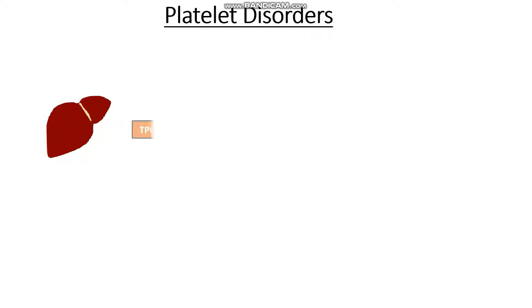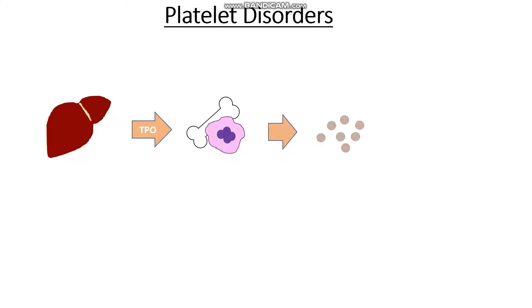So where does it all start? Well it all starts at the liver, with the production of a protein known as thrombopoietin. Thrombopoietin then travels to the bone marrow, and it causes hematopoietic stem cells to go down the myeloid route, and produce lots and lots of these purple cells known as megakaryocytes. The megakaryocytes then swell up, burst, and release platelets into our circulation. These circulating platelets have a shelf life of around 10 days, before they are finally broken down by the spleen.